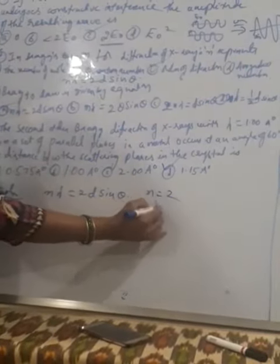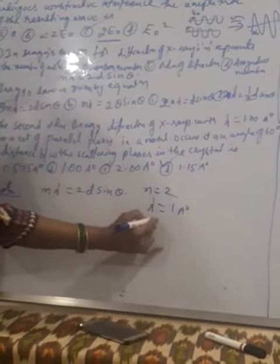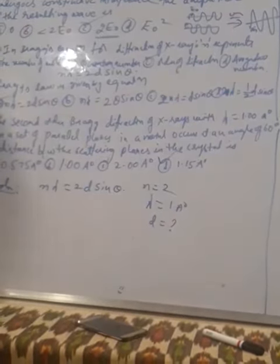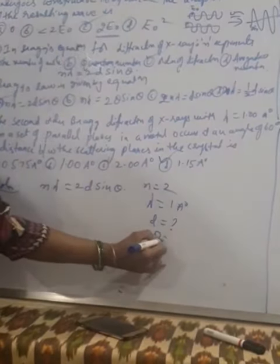And lambda is equal to 1 angstrom unit. And you have to calculate D. And theta is 60 degrees.